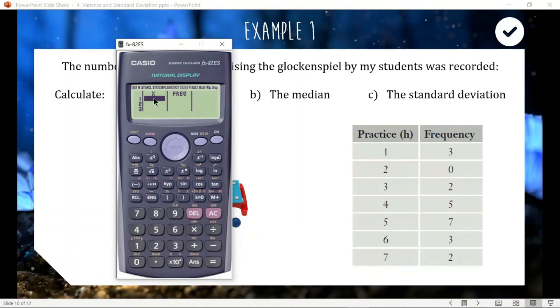Now we enter our data. So I'm just going to enter the scores first from one to seven. So one, press equals to enter, and then it goes down. So two, three, four. Now I'm going to use the arrows to go across and up to the top. And now we can enter our frequency. So we go three, zero, two. Now our data is entered in. If you press AC, that'll clear the screen, but the data is still stored in your calculator until you turn it off and on again. So it is in there. And now we need to find our statistics.